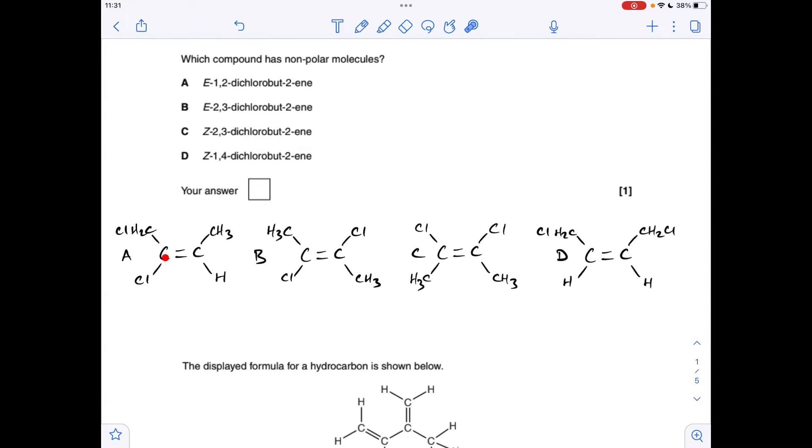Well, this is not symmetrical, so this will be a polar molecule. Moving on to B, we've got E-2,3-dichlorobutene.